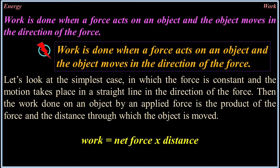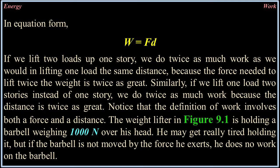Work is done when a force acts on an object and that object moves in the direction of the force. Work is force times distance. In the simplest case, where the force is constant and motion takes place in a straight line in the direction of the force, the work done on an object is the product of the force and the distance through which the object is moved. Work equals net force times distance. In equation form: W = Fd, or work equals force times distance.